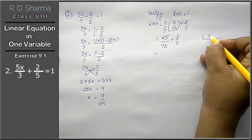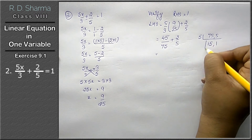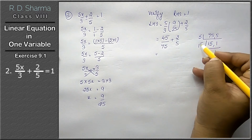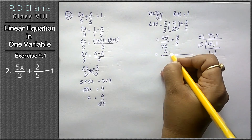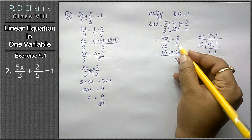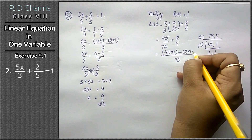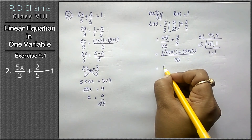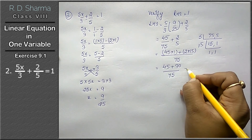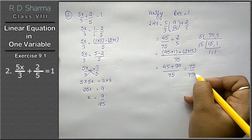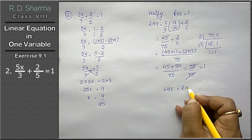LCM of 75 and 5: 5 goes into 75 fifteen times, so LCM is 75. That means 45 will be multiplied by 1, and 2 will be multiplied by 15. So we get 45 plus 30 upon 75, which equals 75 upon 75. Cancelling, we get 1 — so left hand side equals right hand side. Verified.